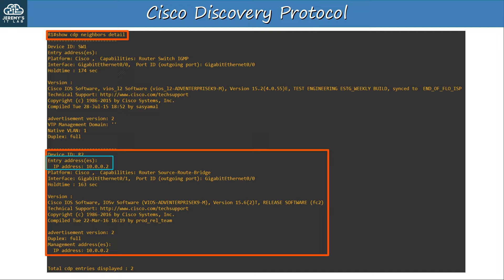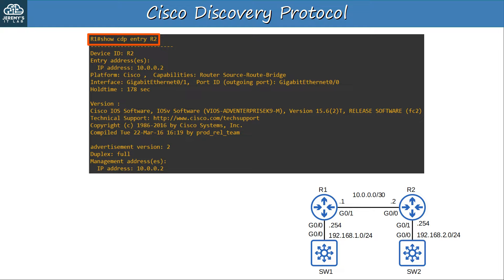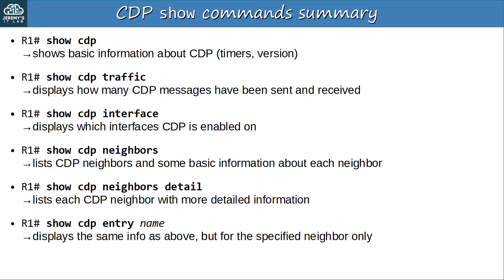If the device has a lot of CDP neighbors, the output of SHOW CDP NEIGHBORS DETAIL can get quite long. However, there is another command which lets you view detailed information for just a single neighbor: SHOW CDP ENTRY followed by the neighbor's hostname — I used R2 in this case. The output is exactly the same as in SHOW CDP NEIGHBORS DETAIL, but it only shows the specified neighbor. Because CDP is enabled by default, if you want to use CDP in your network you don't have to do any configuration — you can just use these SHOW commands.